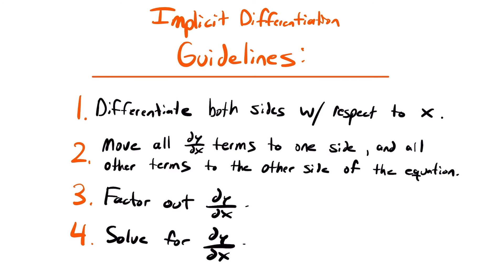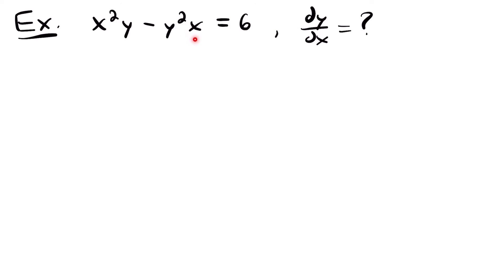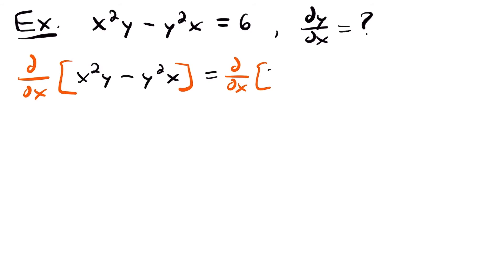Let's look at another example: x squared times y minus y squared times x equals 6, and we want dy/dx. This is an implicitly defined function where the y's and x's are not separated. The first step is to take the derivative with respect to x of both sides. When you see a term where you have an x multiplied by a y, you have a product rule to deal with. So taking the derivative of x squared times y using the product rule: first function times derivative of second, plus second function times derivative of first.